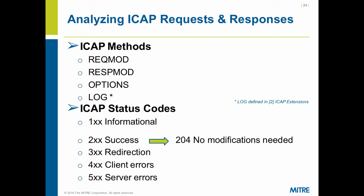ICAP methods: the syntax is very similar to HTTP but there are only three methods defined in the RFC — request modification, response modification, and options. One of the draft extension documents defined a log method. For the ICAP analyzer, options and log don't really matter because they don't contain any HTTP message information; we really only care about the first two methods. Status codes are almost identical to HTTP status codes — the only big difference is that status 204 was redefined to mean no modifications needed. If everything is well and there are no policy violations, you'll see a status 204.